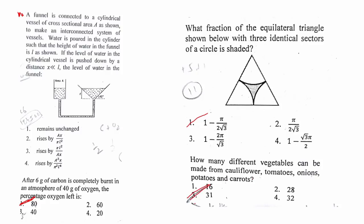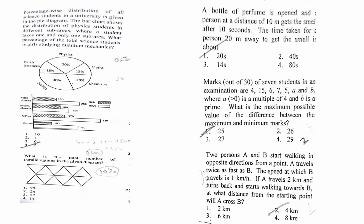How many different vegetables can be made from cauliflower, tomatoes, onions, potatoes? The answer is 31—this was a question from permutation combination. This was a question from percentages—the answer is number of girls is 2 percent of the total. Then this parallelogram question is a repeated question; the answer for this is 24. A bottle of perfume is opened—I think this was easy; the answer is 20 seconds.